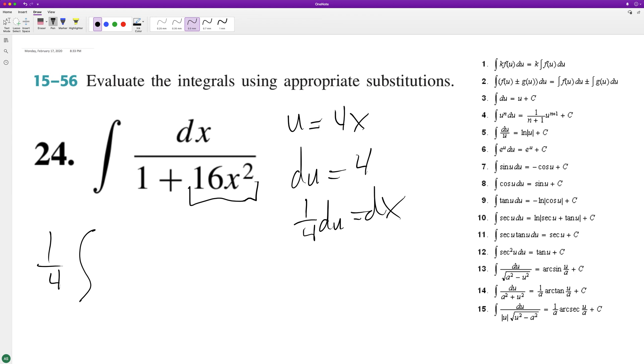So we integrate and this is going to be du over 1 plus u squared. And if you look down here, this matches up with equation 14, where a is 1. 1 squared is 1 plus u squared.